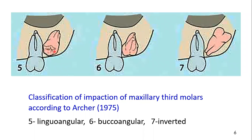We have discussed in detail how you can appreciate whether it is a linguoversion or buccoversion on conventional radiography. For other cases, you can do an occlusal perpendicular radiograph or CBCT to exactly know whether it is palatal angular or buccoangular. This is a buccoangular — you can see the roots and the crown is not visible.